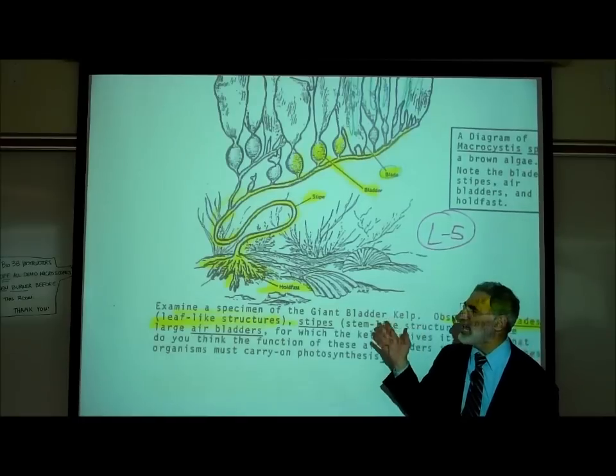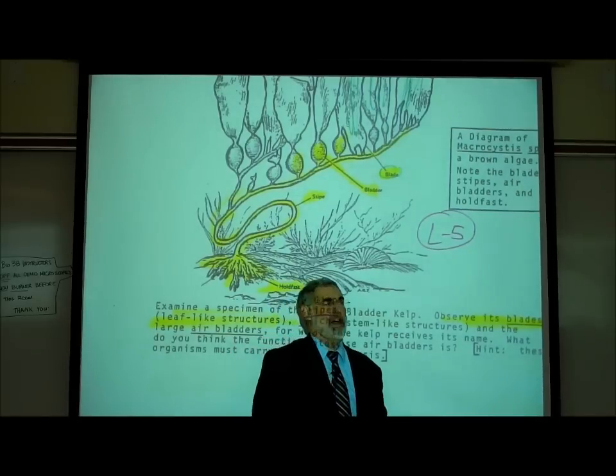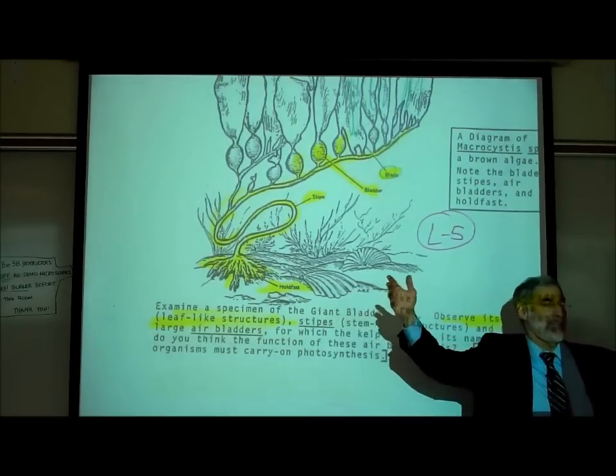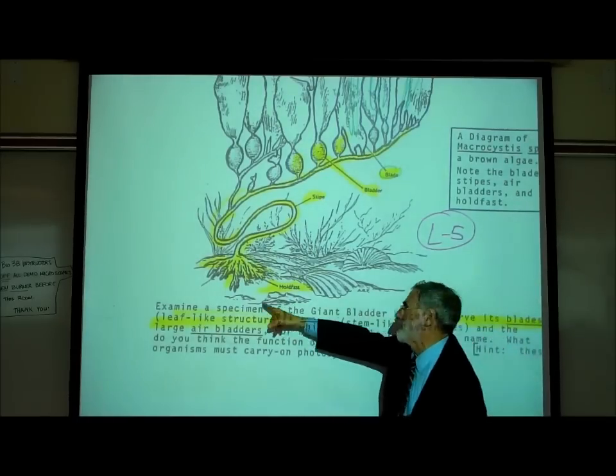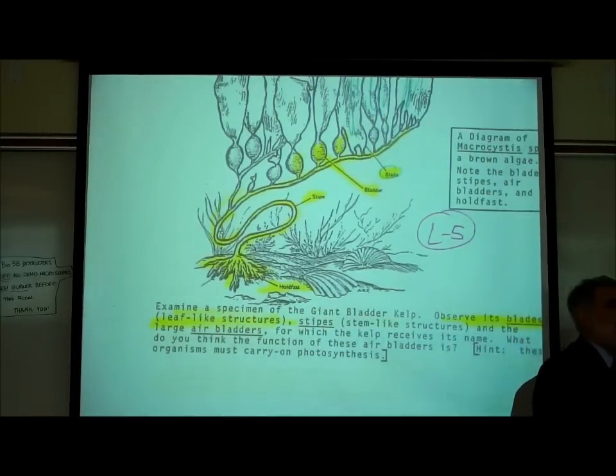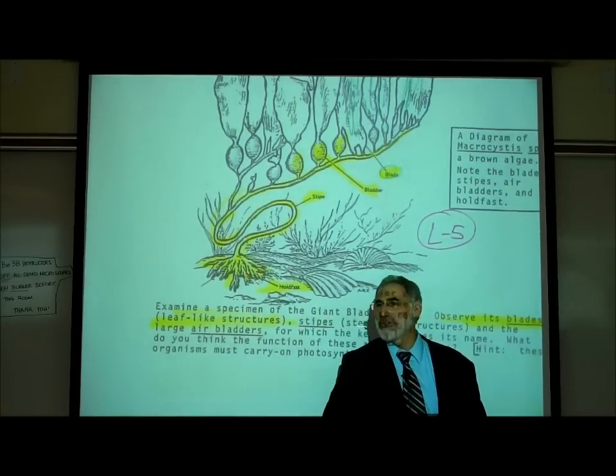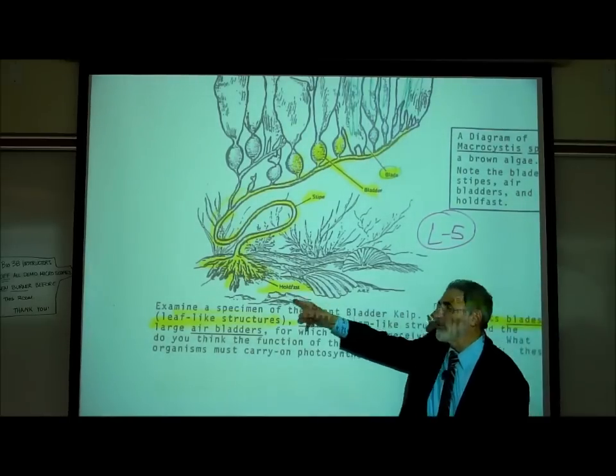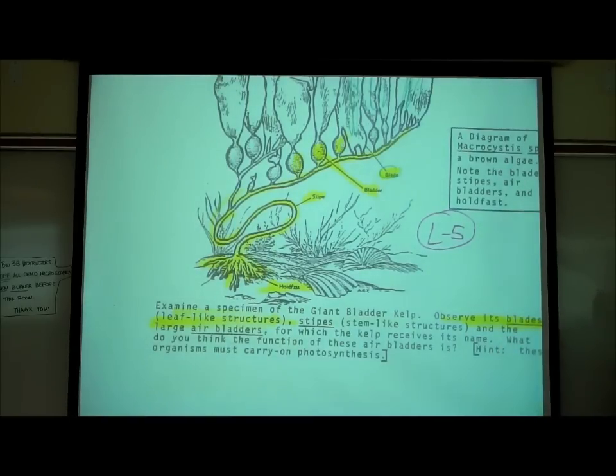It has a thing down here labeled a holdfast. You probably would have called that a root, but it's not a root. The main reason why it's not a root is it doesn't have any vessels or tubes, this is not a vascular plant. But furthermore, it doesn't have the same function as a root. The function of roots in higher plants is to absorb water and minerals from the soil. This guy doesn't need to absorb water and minerals. This kelp lives in the water, in the ocean water. It's surrounded by water and minerals. The purpose of this root-like structure is to anchor it to the ground so that the ocean currents don't carry it off to Ecuador. It acts as a holdfast.